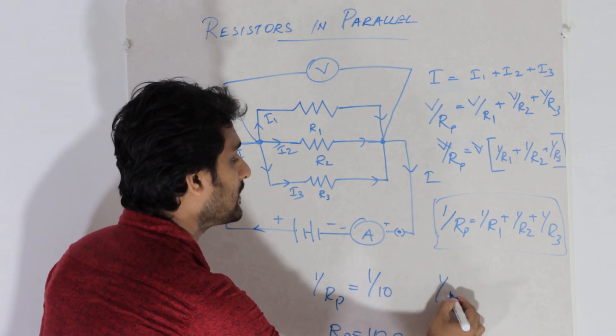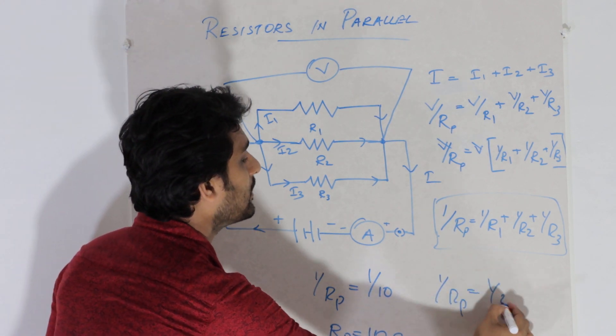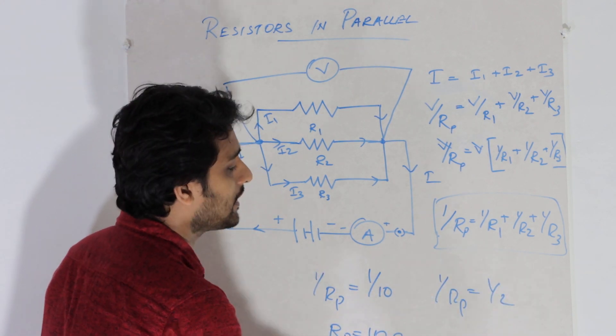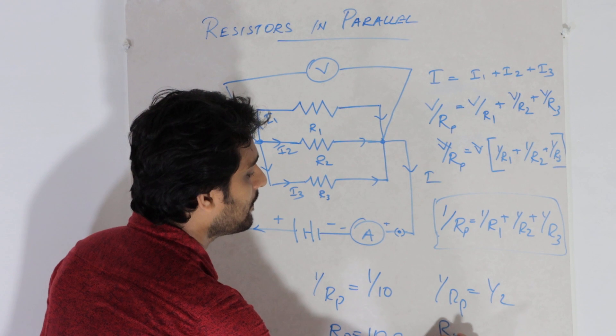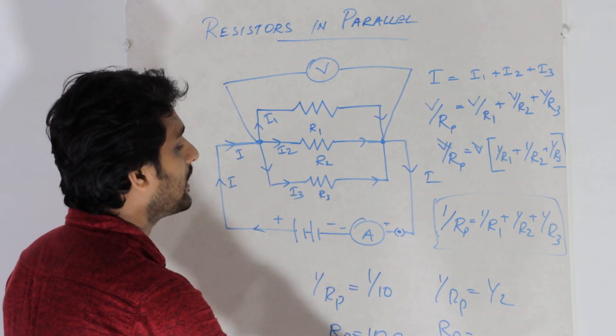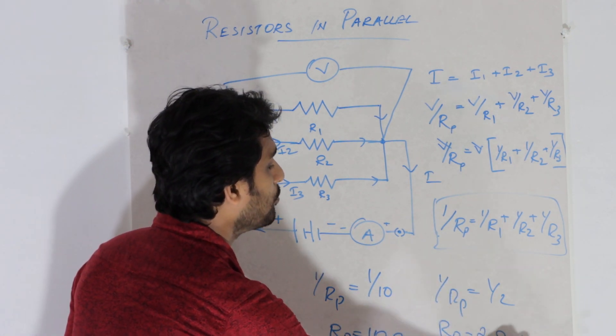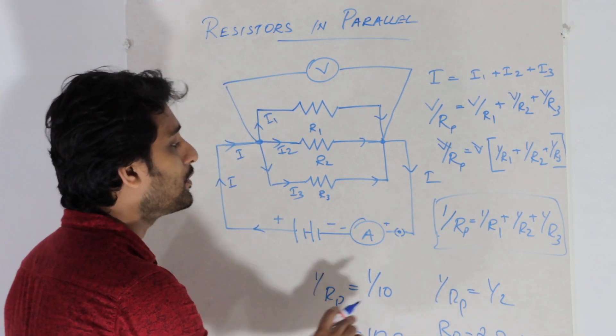For another example: 1 by Rp is equal to 1 by 2, so Rp is equal to 2 ohm.